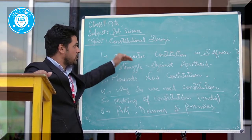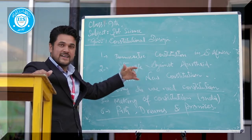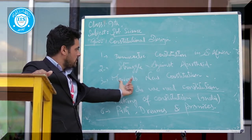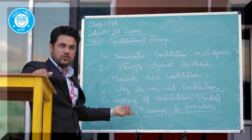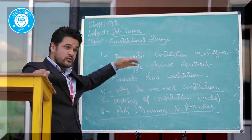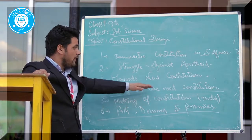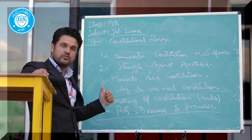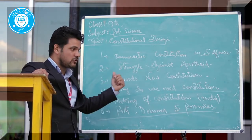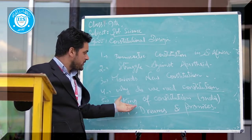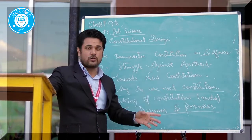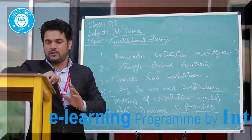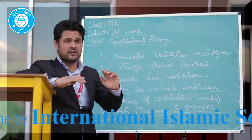Number one topic will be democratic constitution in South Africa. Number two topic will be the struggle against apartheid in South Africa. Number three, towards the new constitution — how did the constitution come to South Africa? Let us start one by one. First, we will discuss the democratic constitution in South Africa.